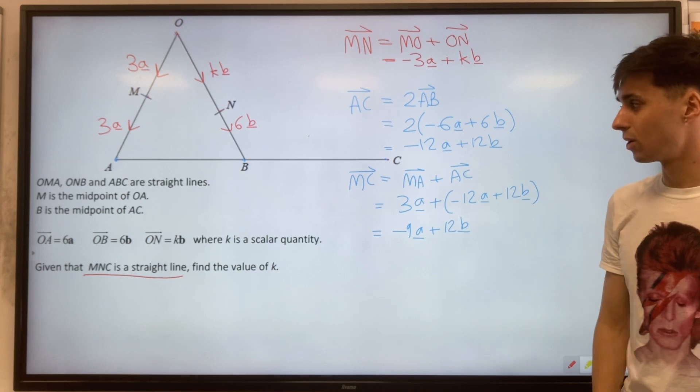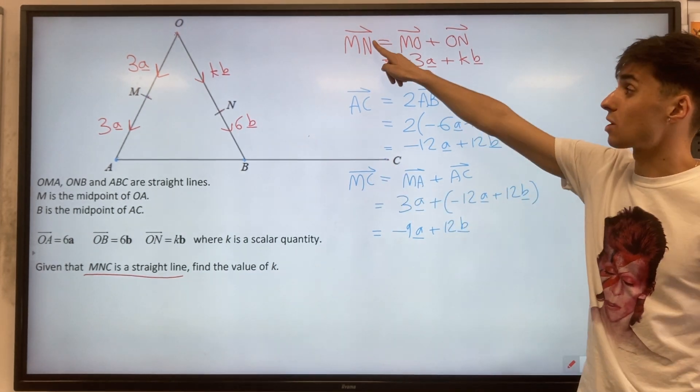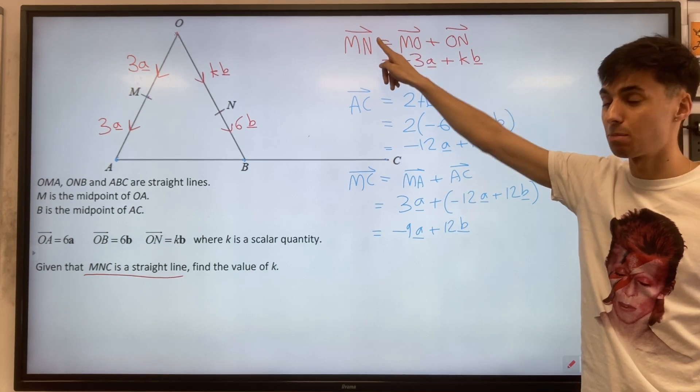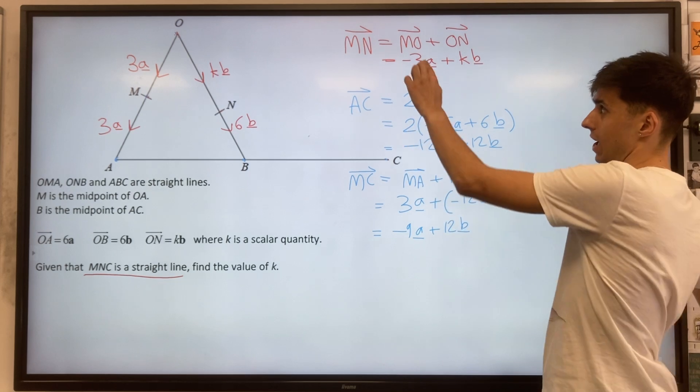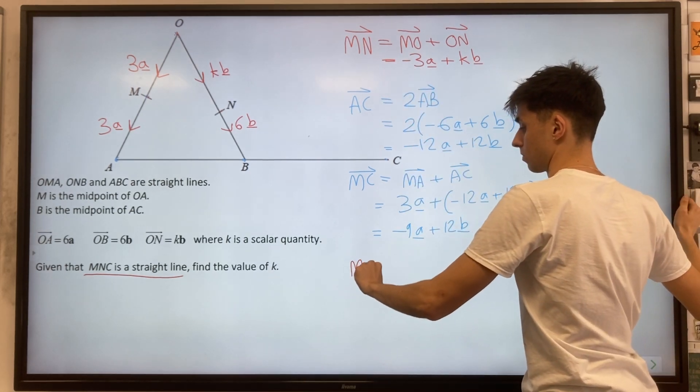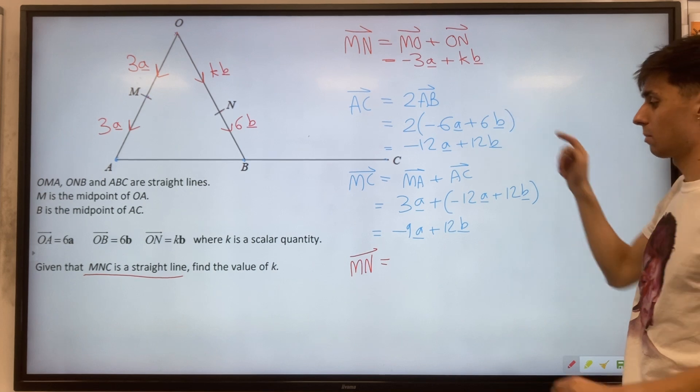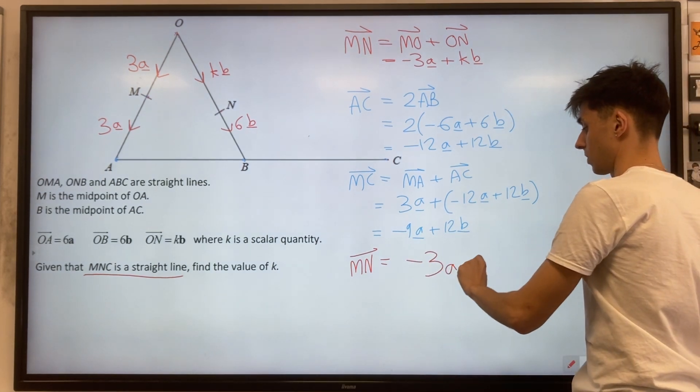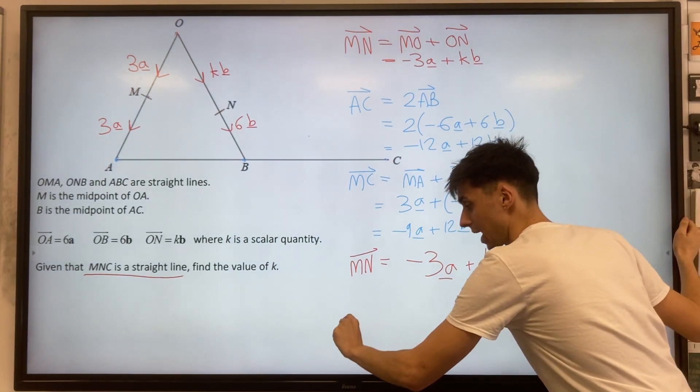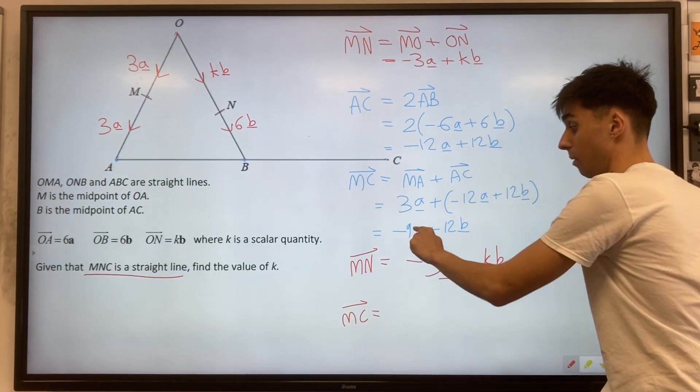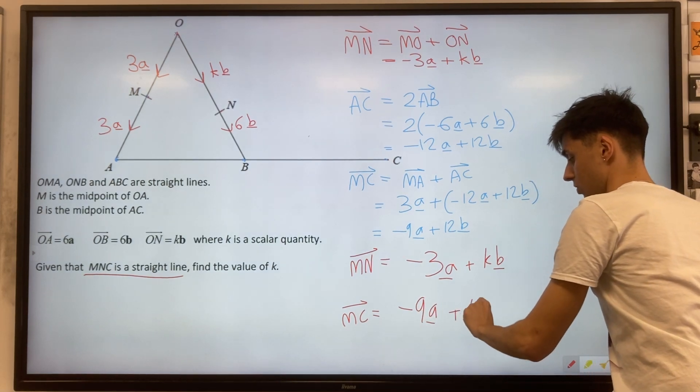Switching colors once again. Now we use the kind of thinking where MC is some multiple of MN because they're on a straight line together. So let's write our two vectors. MN is minus 3a plus kb, and MC is minus 9a plus 12b.